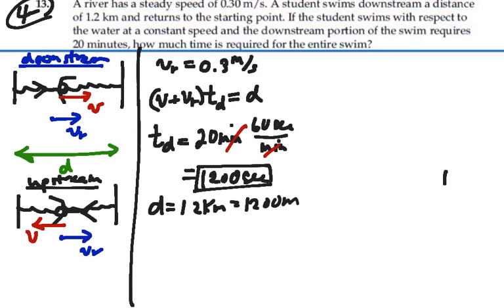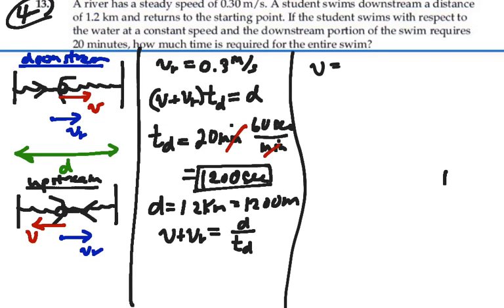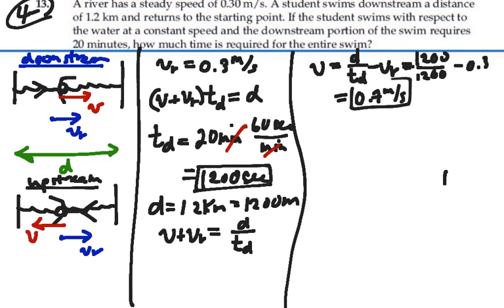we can calculate the velocity of the swimmer. So we have V plus V_R is now equal to D divided by the time for the downstream. So the velocity of the swimmer is going to be D divided by the time for the downstream minus the velocity of the river. So that's going to be 1,200 over 1,200 minus 0.3, or 1 minus 0.3, or 0.7 meters per second. That's the velocity of the swimmer.